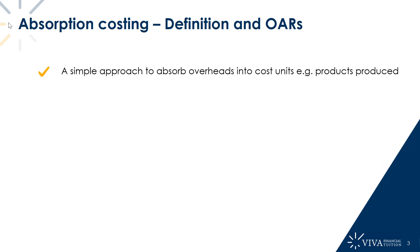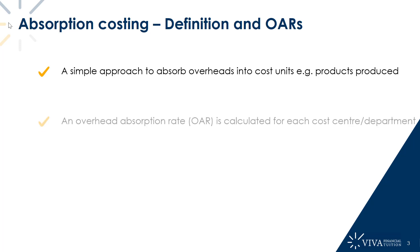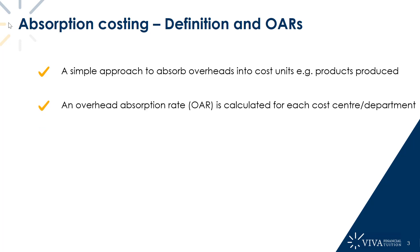Absorption costing is said to be a simple approach to absorb overheads into cost units — certainly much more simple than activity-based costing, which we'll cover later in the chapter. What we're trying to do with absorption costing is absorb or charge overheads to our cost units. Cost units are nothing more than the products produced, or, if you're looking at a service business, the service which is provided. In order to do this, we first calculate for each department or cost centre — both terms mean the same thing — what's called an overhead absorption rate, often abbreviated to an OAR.